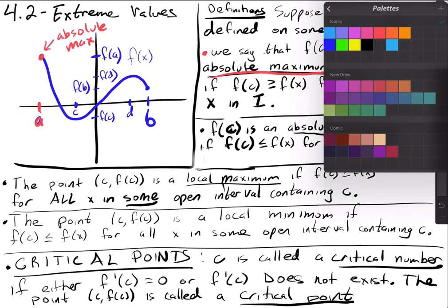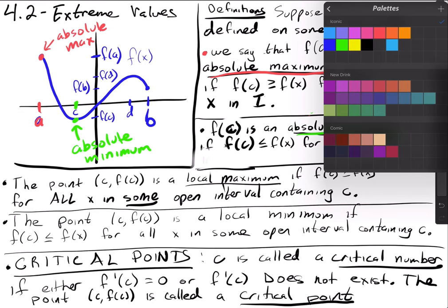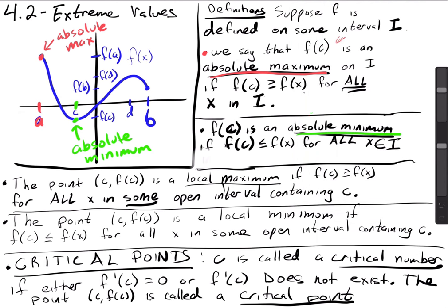The next one is the same thing, just the minimum. So the absolute smallest value of the function — where is it located in this case? It's at c, the one I marked as c right here. This is the absolute minimum. Here it's easy to pick it off from the graph — the absolute maximum is clear, and the absolute minimum is down there. These are also called global maximum and minimum — you might also see it that way.